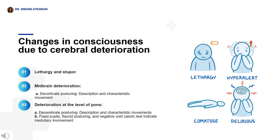As cerebral deterioration increases, changes in consciousness shift to lethargy and stupor. In midbrain deterioration, purposeful movements progress to decorticate posturing, and the patient has small reactive pupils and a positive doll's eyes reflex — that is, the eyes do not turn when the head is moved and they stay fixed in the original position. Decorticate posturing is recognizable by flexed elbows, wrists, and fingers with arms close to the sides, and leg extension with internal rotation and plantar flexion.